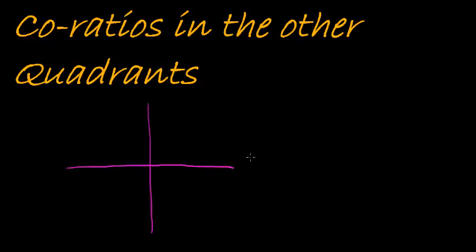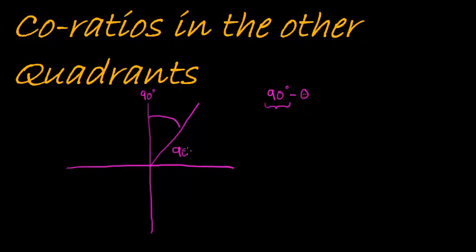In our Cartesian plane, whenever we are talking about an angle like 90 degrees minus theta, we are referring to the y-axis by saying 90 degrees. The angle 90 degrees minus theta means that the remaining angle is theta. Notice how theta is no longer the angle we are making with the x-axis. If we want theta to refer to the x-axis, we have to change from sine to cos, or from cos to sine.